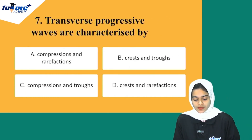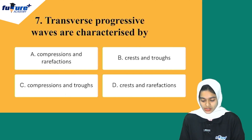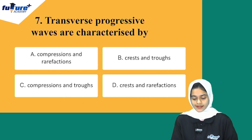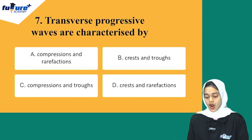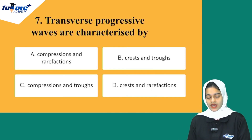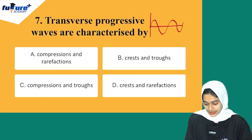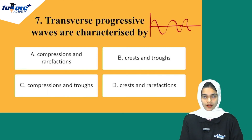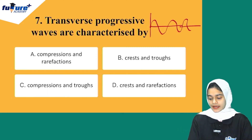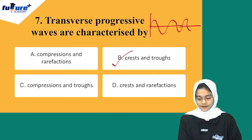Transverse progressive waves are characterized by — Option A: compressions and rarefactions, Option B: crests and troughs, Option C: compressions and troughs, Option D: crests and rarefactions. Transverse waves are characterized by crests and troughs, so Option B is the correct answer.